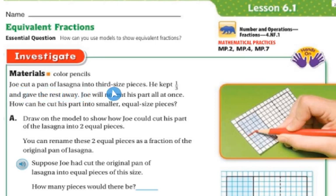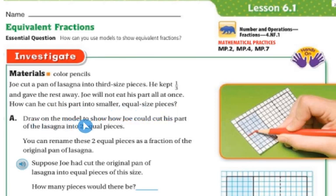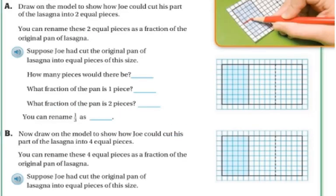Joe cut a pan of lasagna into third-sized pieces. He kept one-third and gave the rest away. Joe will not eat his part all at once. How can he cut his part into smaller, equal-size pieces? Draw a model to show how Joe could cut his part of lasagna into two equal pieces. Looking at the model, the lasagna is cut into three parts, and this one right here is going to be Joe's part — one-third. And he wants to cut his in half.